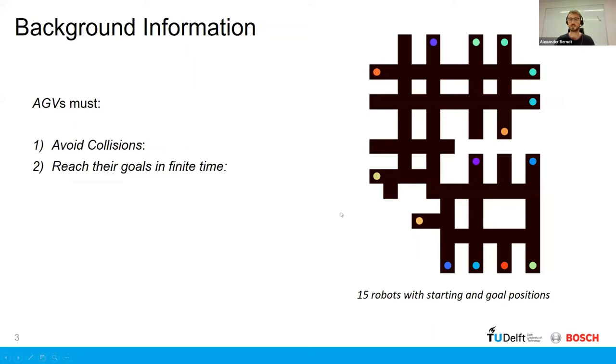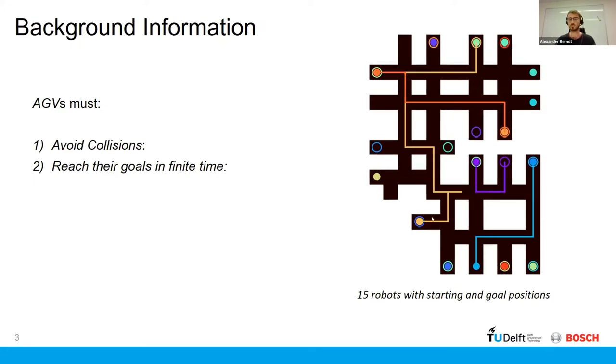So if you look at the schematic here on the right, I have AGVs represented by these colored dots, some goals represented by the correspondingly colored ring, and then the task is to basically find some routes which are collision-free, as I've highlighted a few of them here on the right.